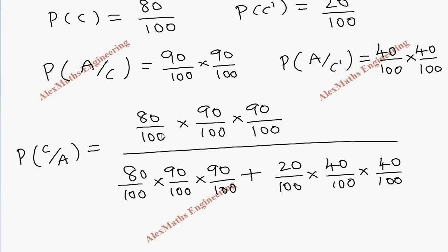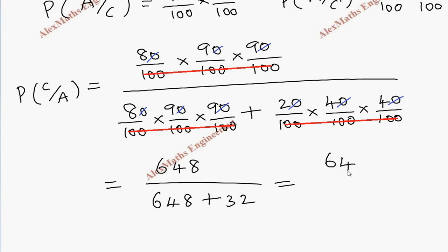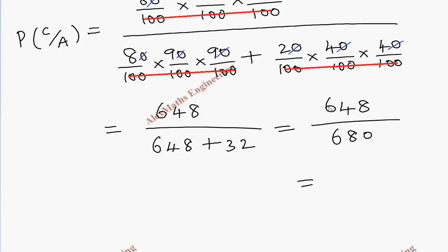Now we can cancel all the common denominators — every term has three zeros, so those cancel. From the remaining, multiplying the numerator gives 8 into 9 into 9 equals 648. The denominator becomes 648 plus 2 into 4 into 4 which is 32, giving 648 by 680. We can simplify by dividing by 8, giving 81 by 85. After division, we get approximately 0.95.